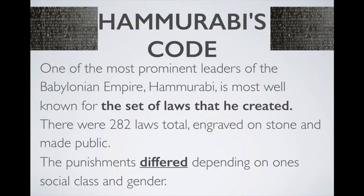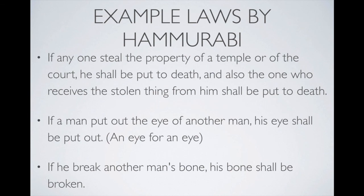Hammurabi is most well known for Hammurabi's Code — a set of 282 laws he created. A key point is that the laws differ depending on your social class and gender, meaning the law was not equally applied to everyone. For example: 'If one steals the property of a temple or the court, he shall be put to death, and also the one who receives the stolen thing shall be put to death.' The most famous law: 'If a man puts out the eye of another man, his eye shall be put out' — in other words, an eye for an eye. These were very strict but straightforward rules.